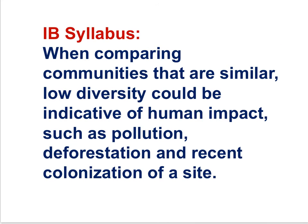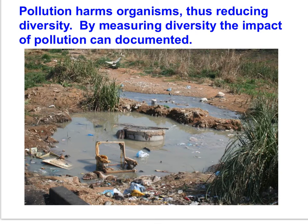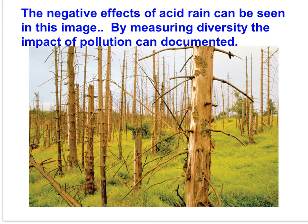When comparing communities that are similar, low diversity could be indicative of human impact, such as pollution, deforestation, and recent colonization of the site. Pollution harms organisms, thus reducing diversity. By measuring diversity, the impact of pollution could be documented and the site could be targeted for restoration. The negative effects of acid rain can be seen in the image. Quantification of biodiversity is important to conservation efforts, so that areas of high biodiversity may be identified, explored, and appropriate conservation put into place where possible.